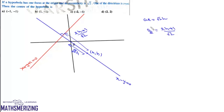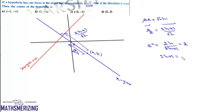Distance from center to focus = √(2h²) = √2 · h, and distance from center to directrix = |2h + 1| / √2. Using ae = √2 · h and a/e = (2h + 1) / √2, we divide these to eliminate a: e² = 2h / (2h + 1) · √2 / √2 → e² = 2h / (2h + 1). Since e = √2, e² = 2, so 2(2h + 1) = 2h, giving h = -1. Therefore the center is at (-1, -1).